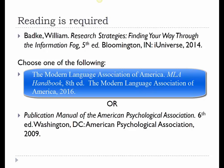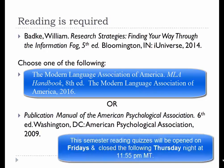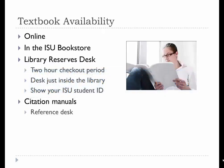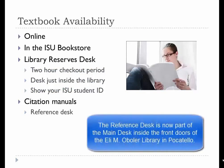Reading quizzes will open on Saturdays and close on Thursday nights, so they will be open a full week. Choose to purchase one of two citation manuals, as you will need to consult them in order to document or cite your sources. If you are going into the health sciences, choose the APA manual — you will be glad you did. If you live in the Pocatello area, you can check out the textbook from the Reserves Desk, just inside the main doors of the Eli M. Obler Library.